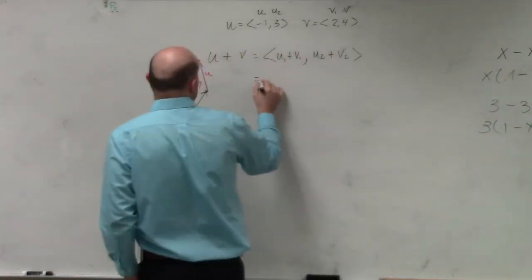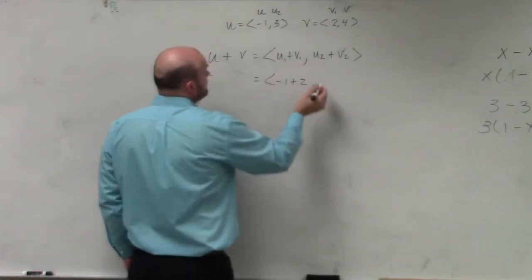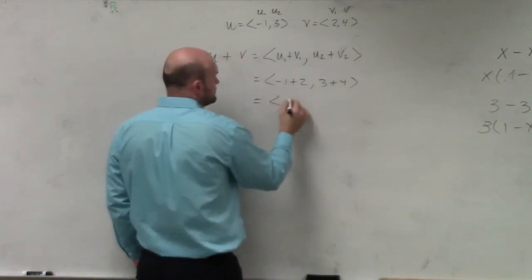So all we're really doing is combining those components. So when we do that, we have negative 1 plus 2 comma 3 plus 4, which equals 1 comma 7.